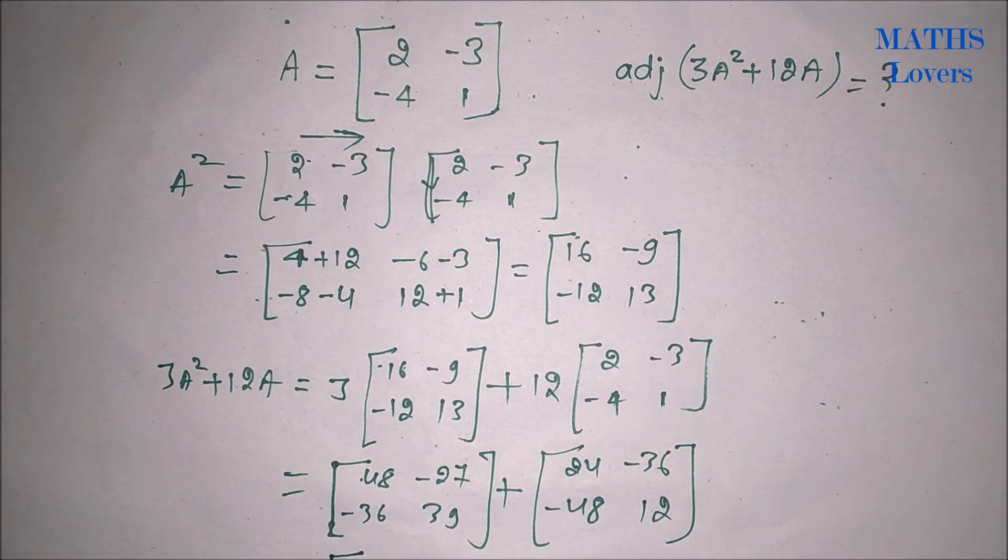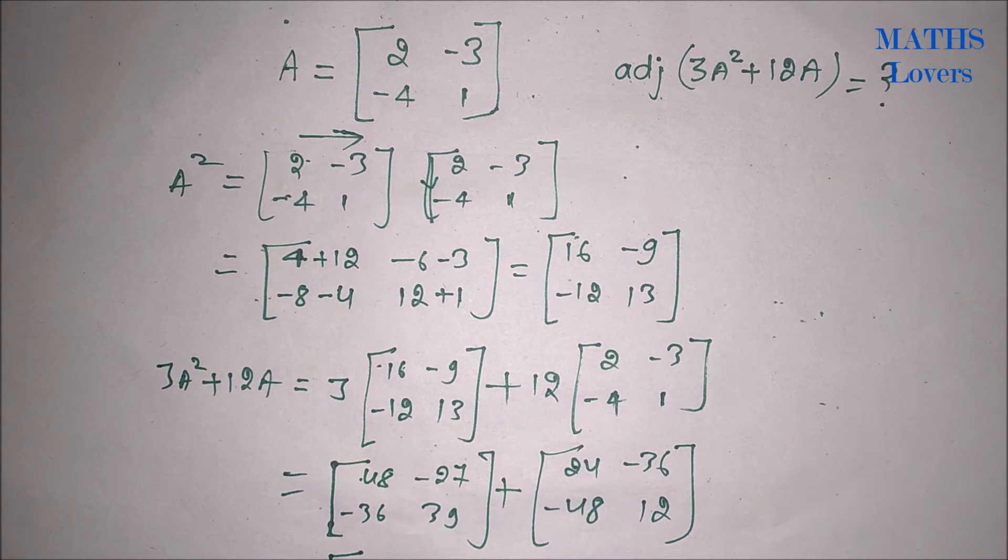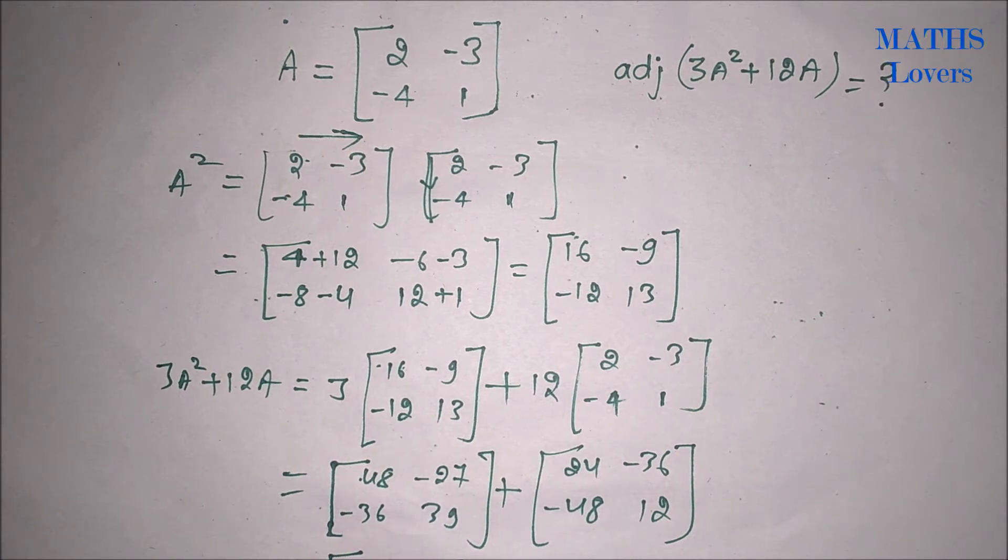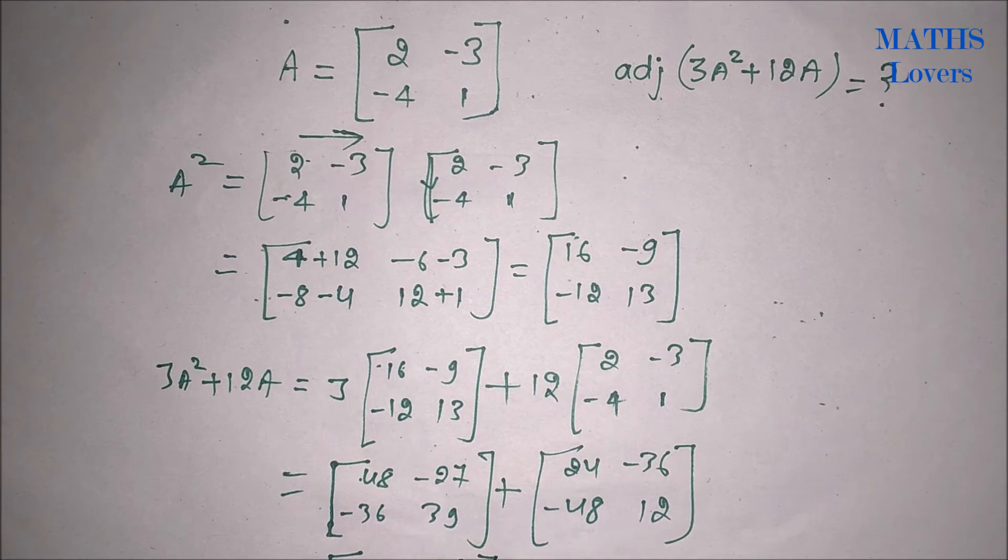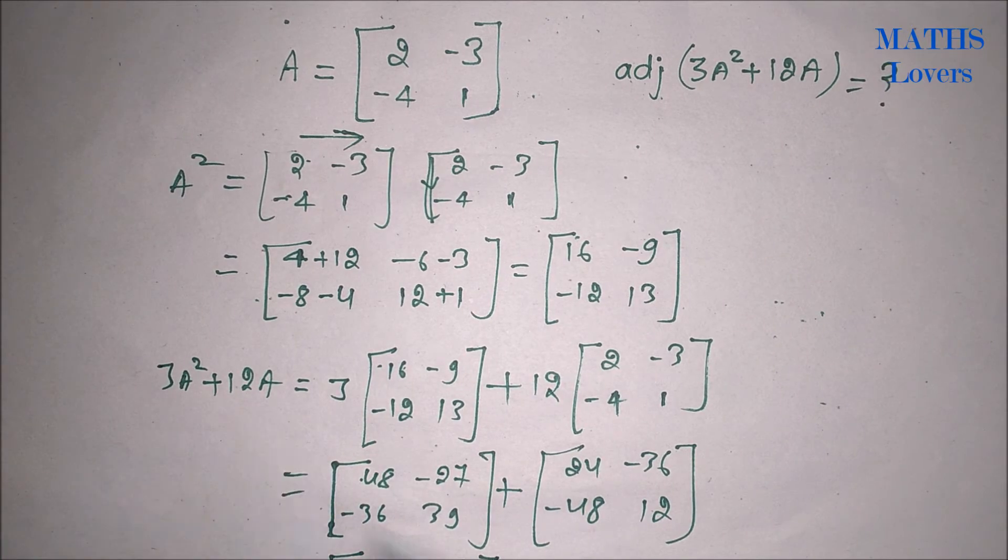So if we add both then we will get 48 plus 24 is equal to 72, and minus 27 minus 36 equals minus 63, minus 36 minus 48 equals minus 84, and 39 plus 12 equals 51. So this is our 3A squared plus 12A.